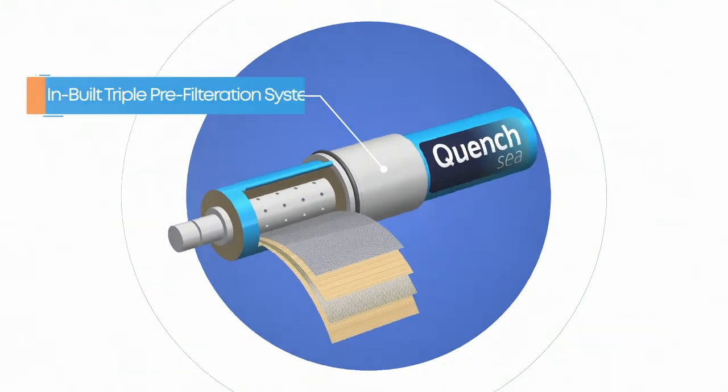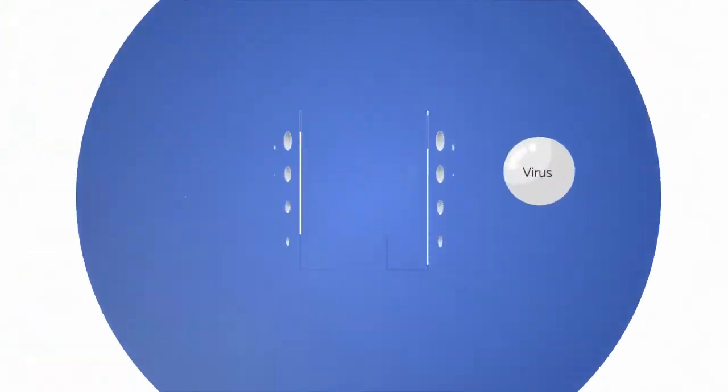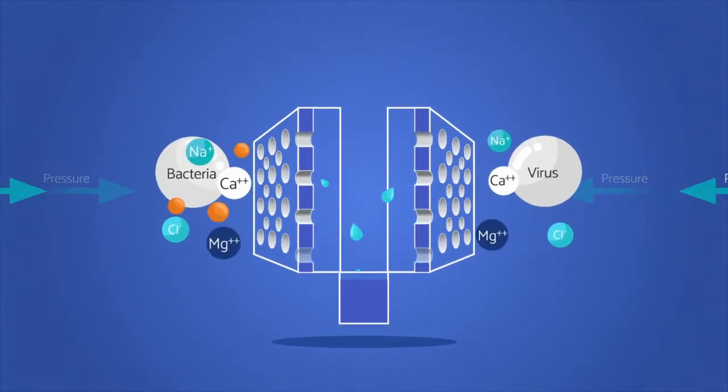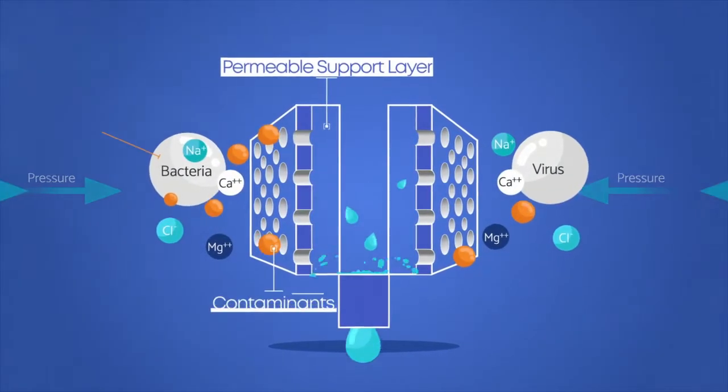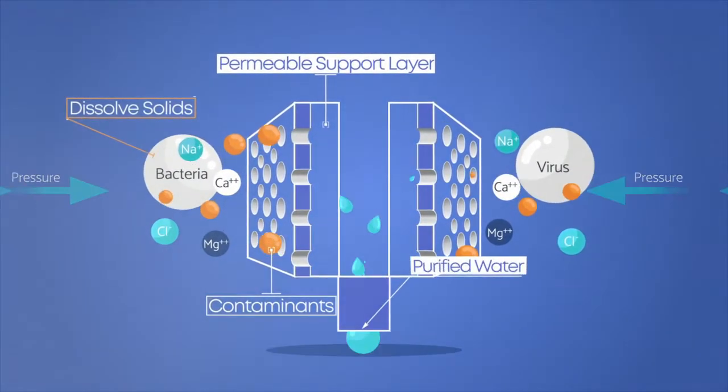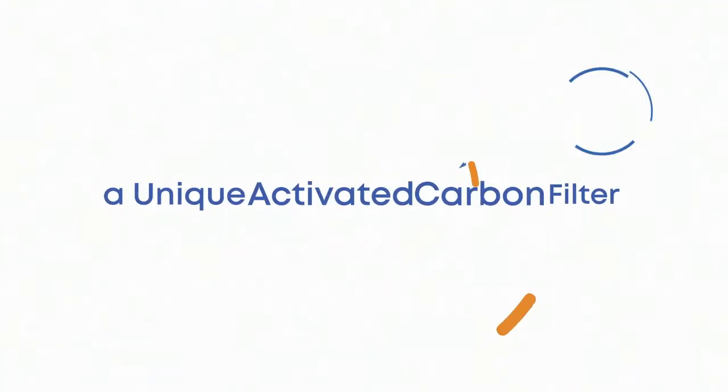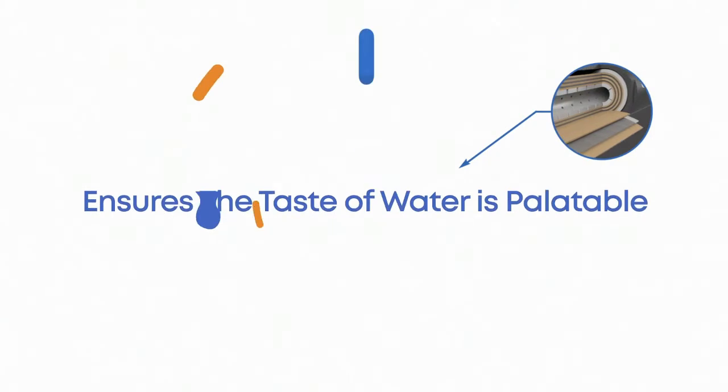QuenchSea has an inbuilt triple pre-filtration system. Microfilters and an ultra-filtration cartridge remove suspended particles as small as 0.01 microns including bacteria, viruses and microplastics. A unique activated carbon filter ensures the taste of water is palatable.